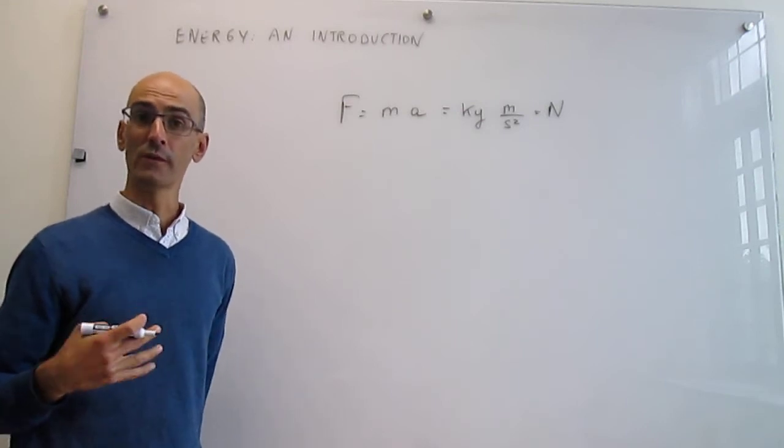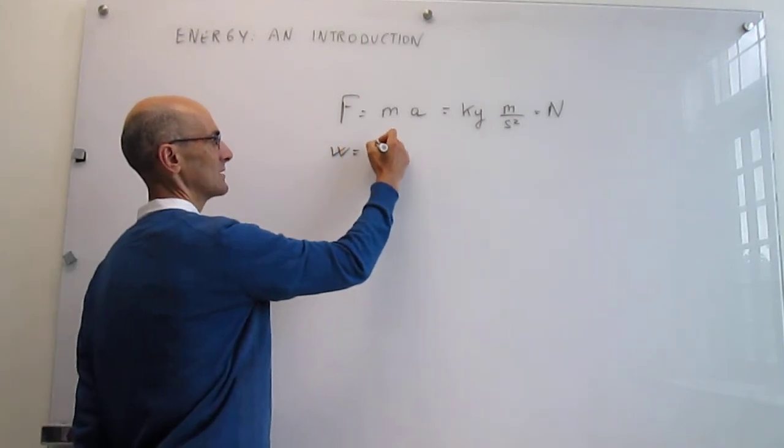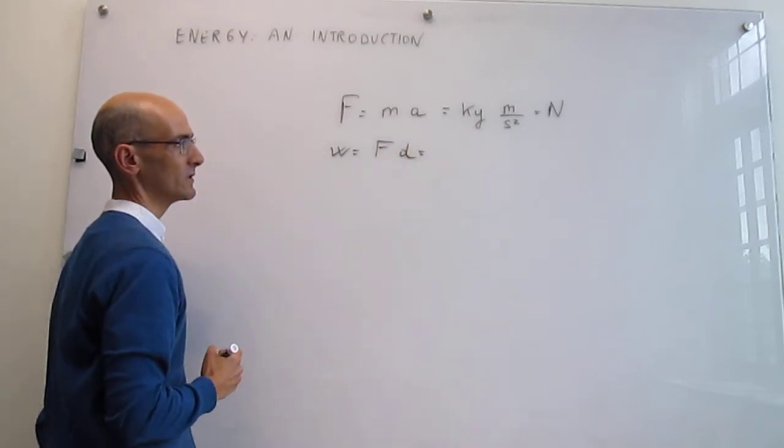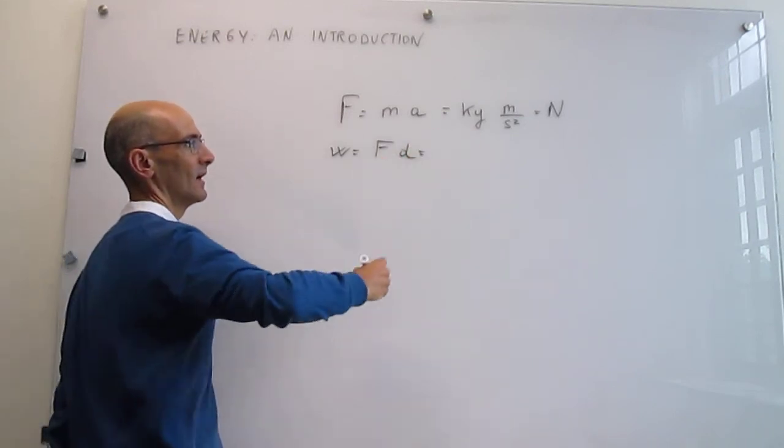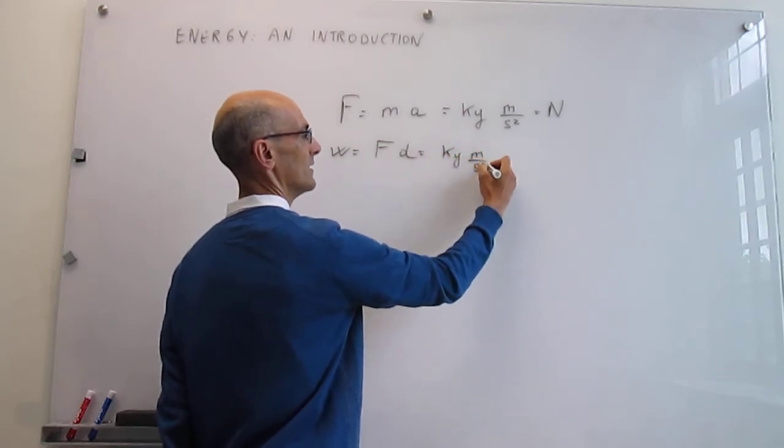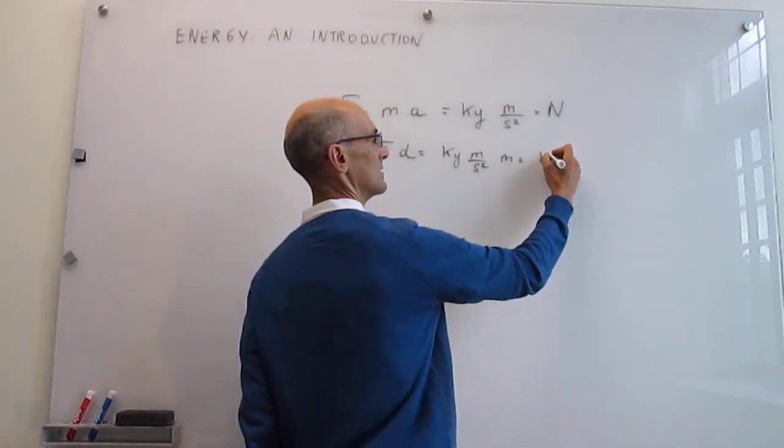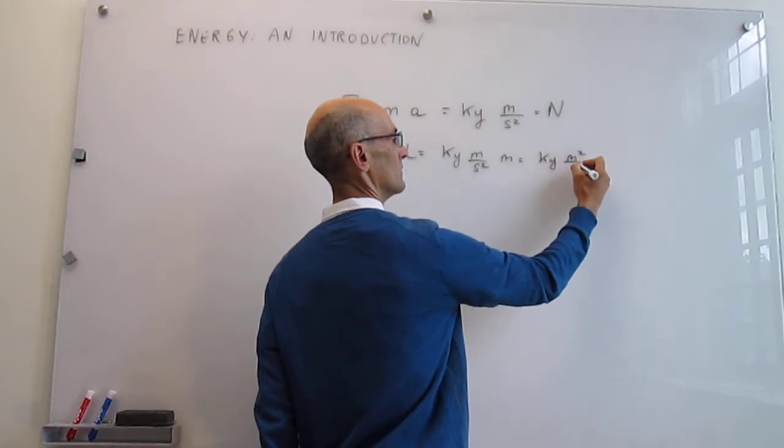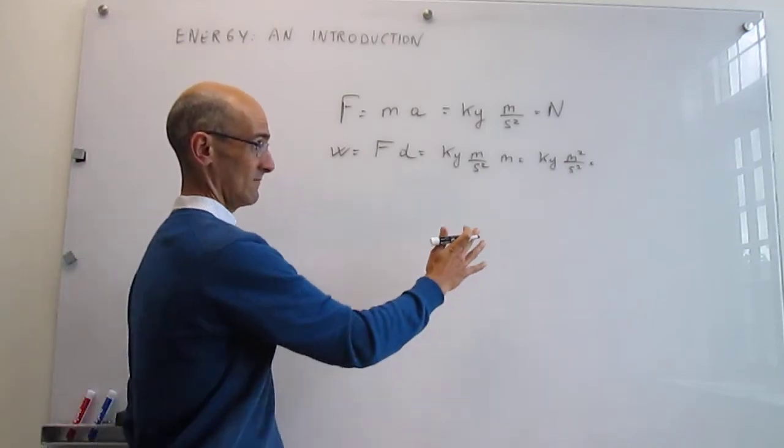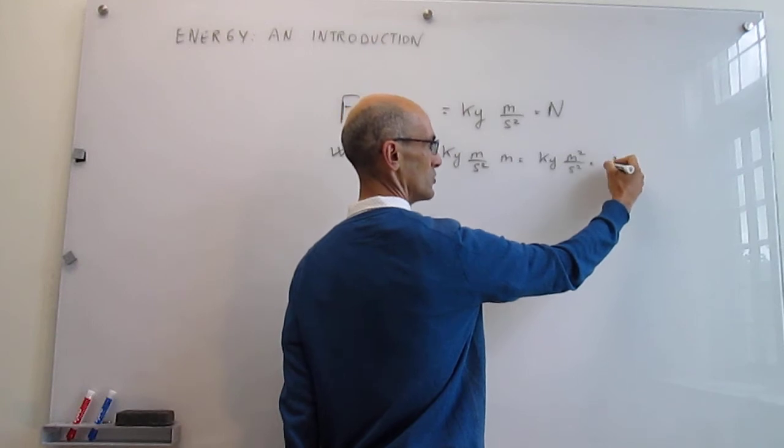Now let's move on to work, which has an important definition: force times distance (W = F·d). We know the units of force are kg·m/s², and distance is meters, so work has units of kg·m²/s². Instead of using this collection of units, we define a new one called the joule.